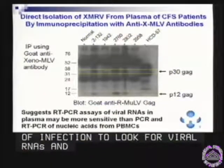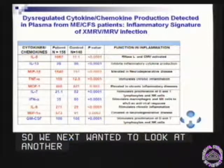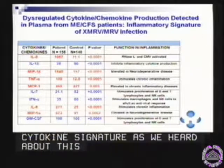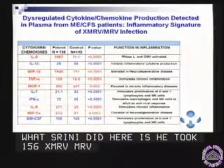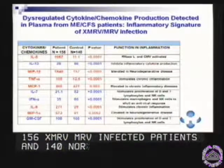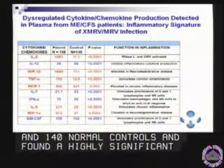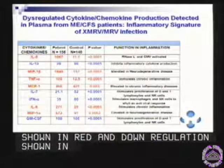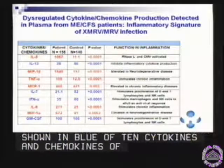We next wanted to look at another footprint, and that is an inflammatory cytokine signature, as we've heard a lot about this morning. What Vinny Lombardi did here is he took 156 XMRV-infected patients and 140 normal controls, and found a highly significant dysregulation — both upregulation shown in red and downregulation shown in blue — of 10 cytokines and chemokines. He did this in a multiplex format on a Luminex platform where we screened everything without bias.